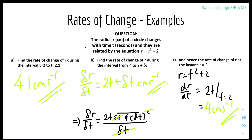The point here is to show that in rate of change questions, you don't necessarily have to use delta R in every part, because sometimes the question asks for the rate of change of something, which is d-something over dT — so it doesn't involve any delta.